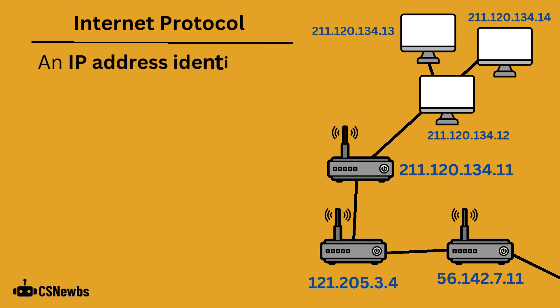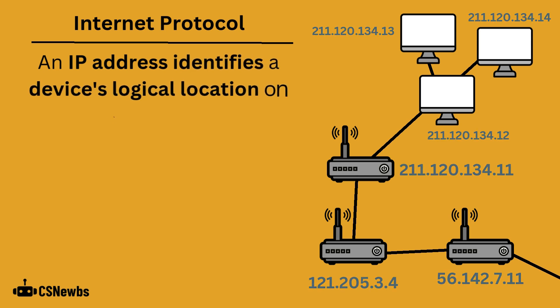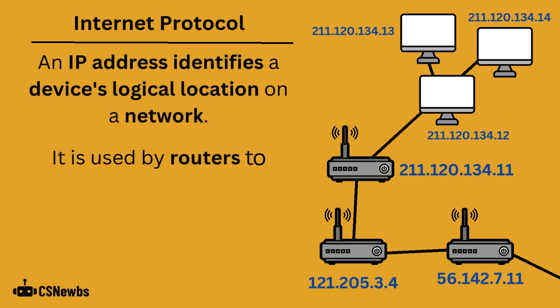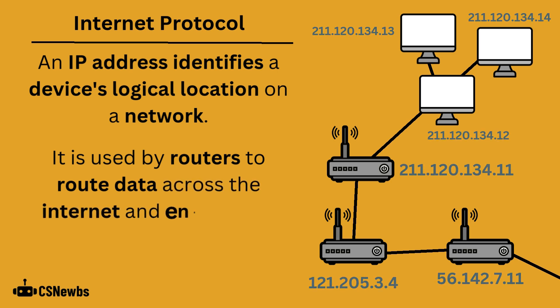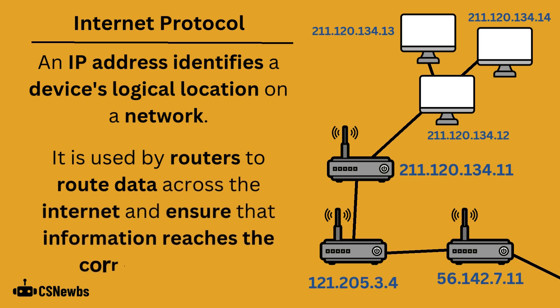An IP address identifies a device's logical location on a network. It is used by routers to route data across the internet and ensure that information reaches the correct network.